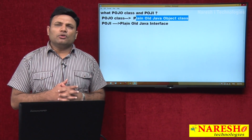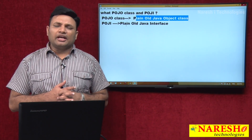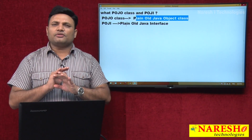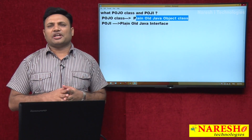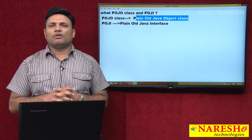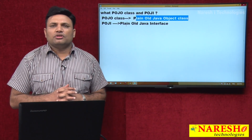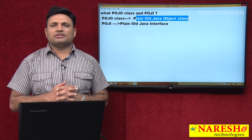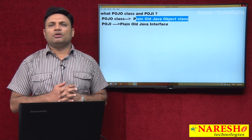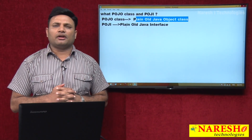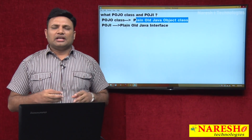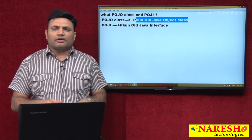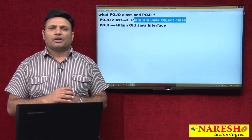POJI — Plain Old Java Interface. A normal interface without any specialities is called POJI — Plain Old Java Interface. It is an ordinary interface, a simple interface without any specialities.